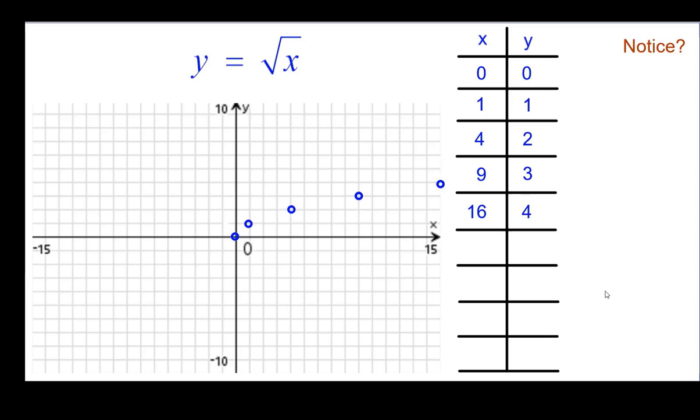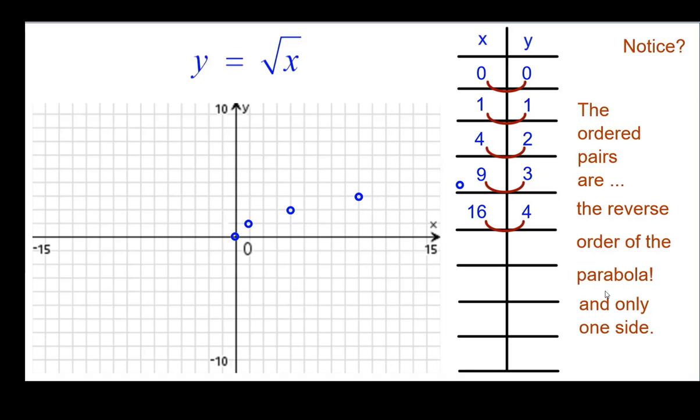So do you notice anything here about those ordered pairs, similar to ones we've done before? Look at them. The ordered pairs are the reverse order of the parabola on one side of that parabola. They're just switched.